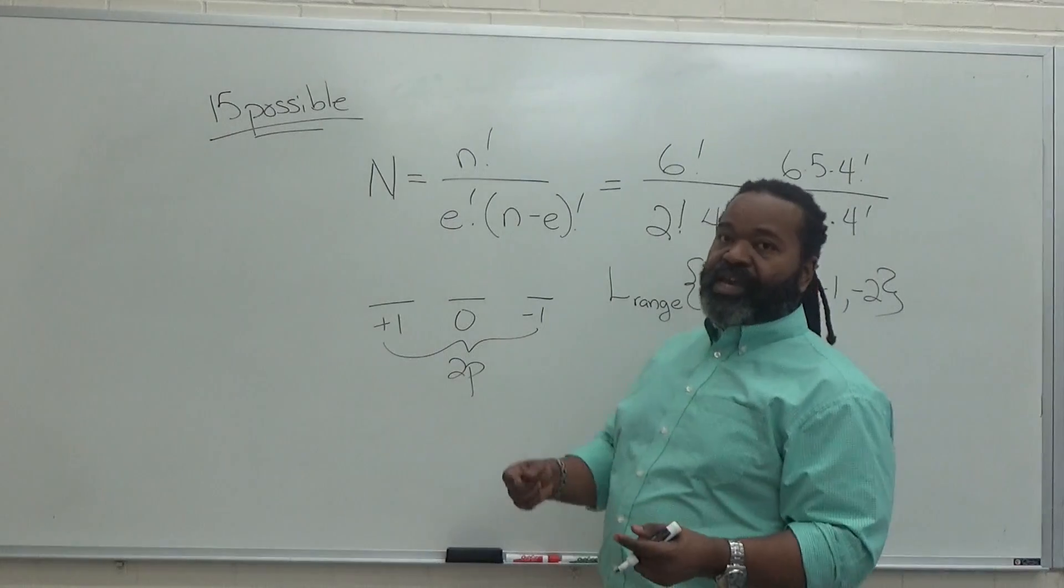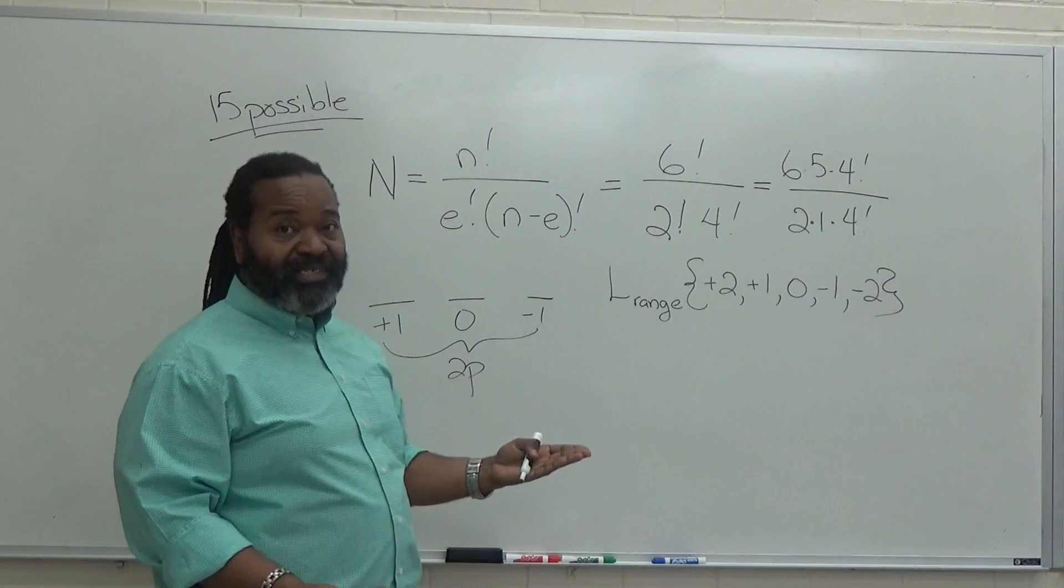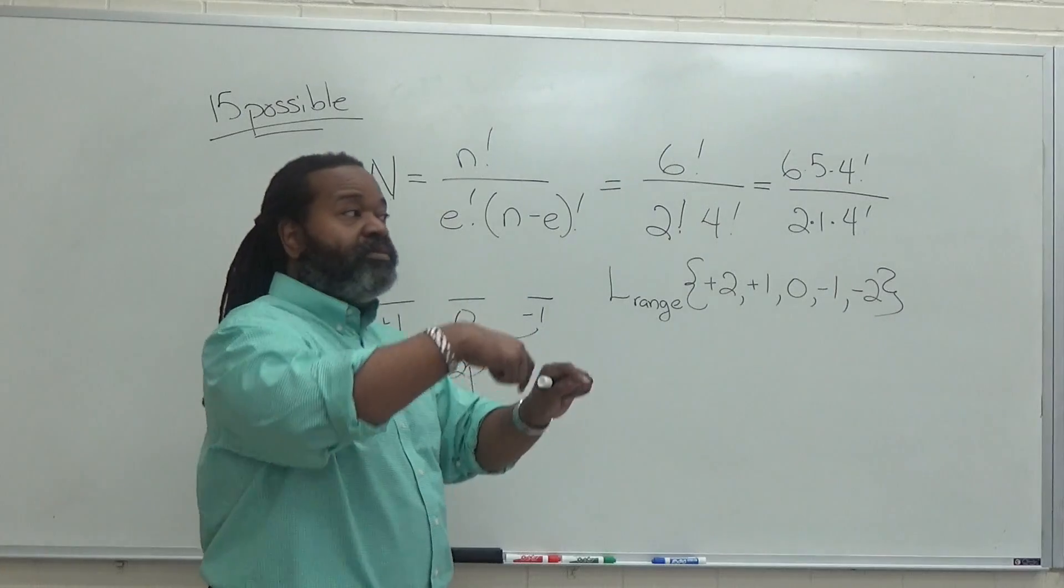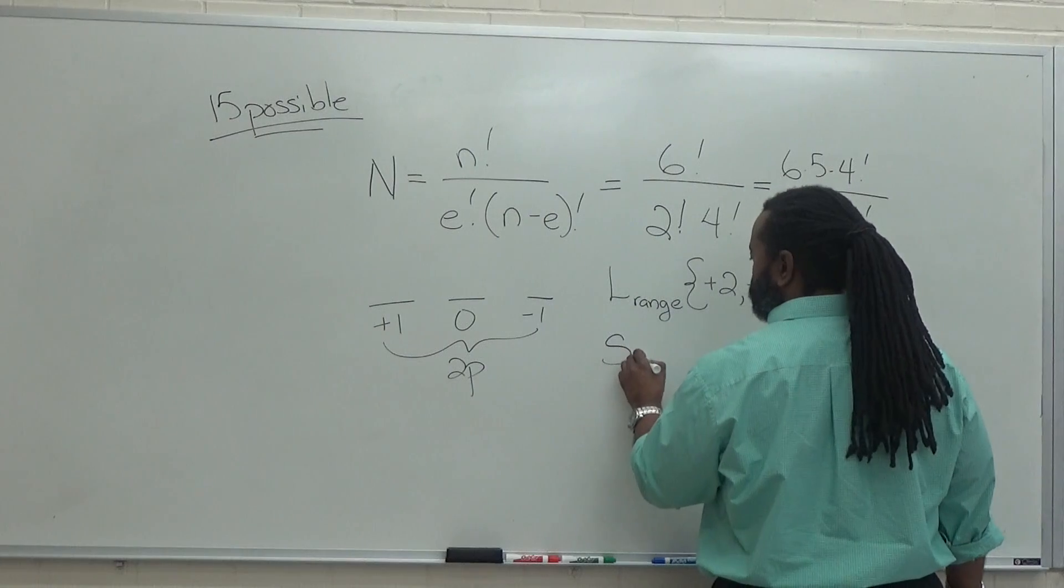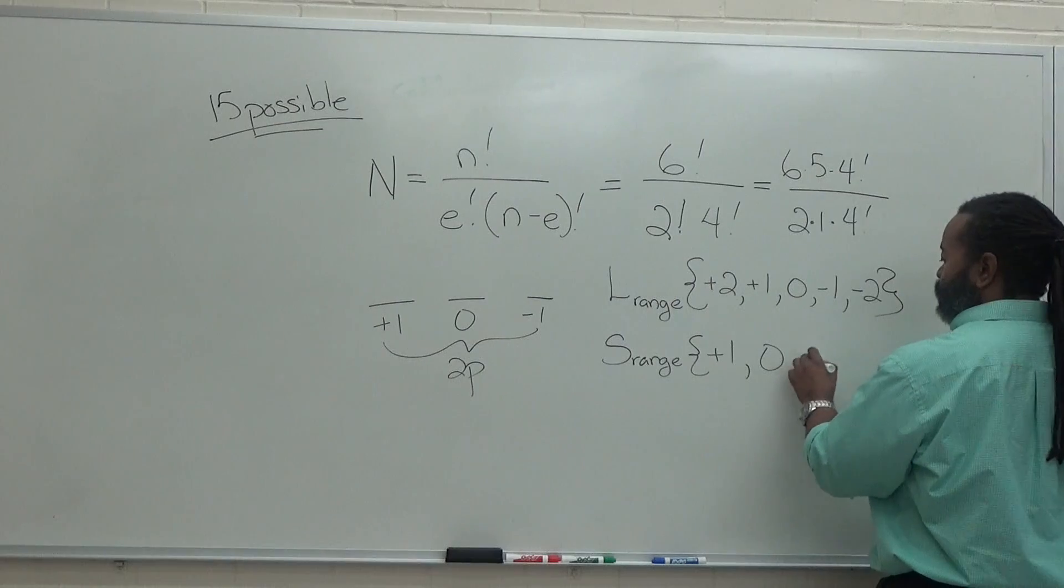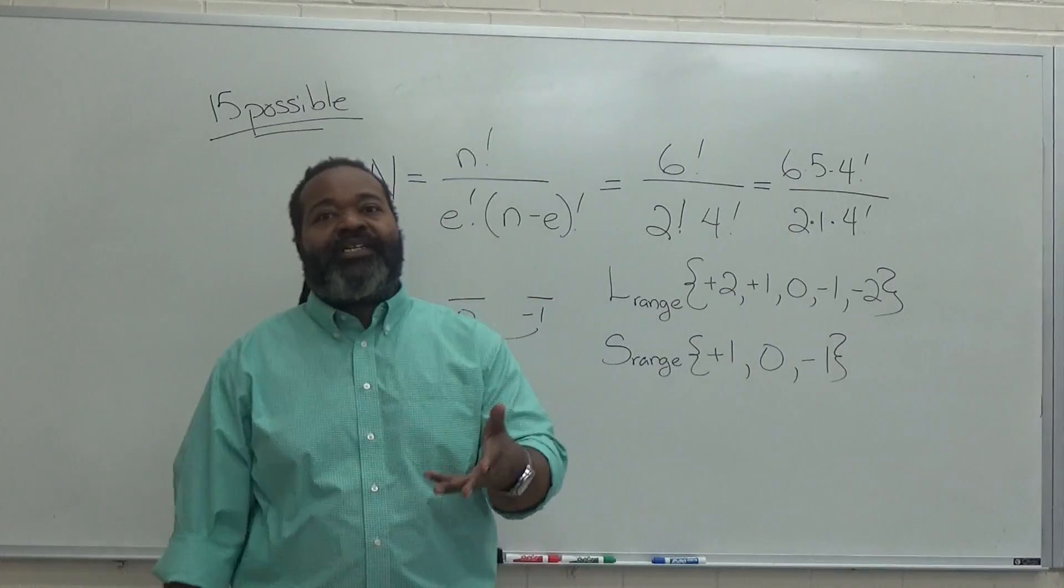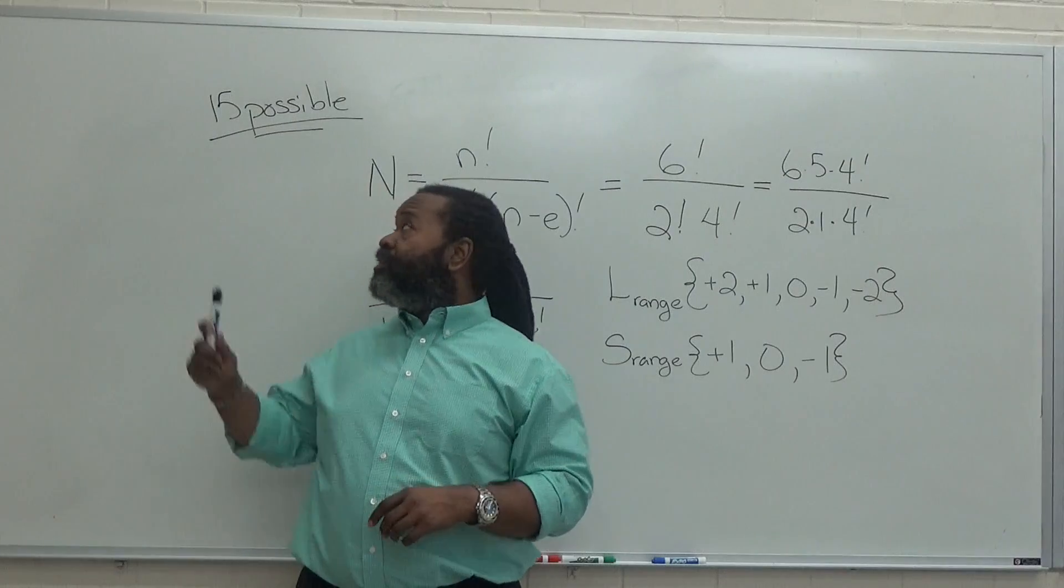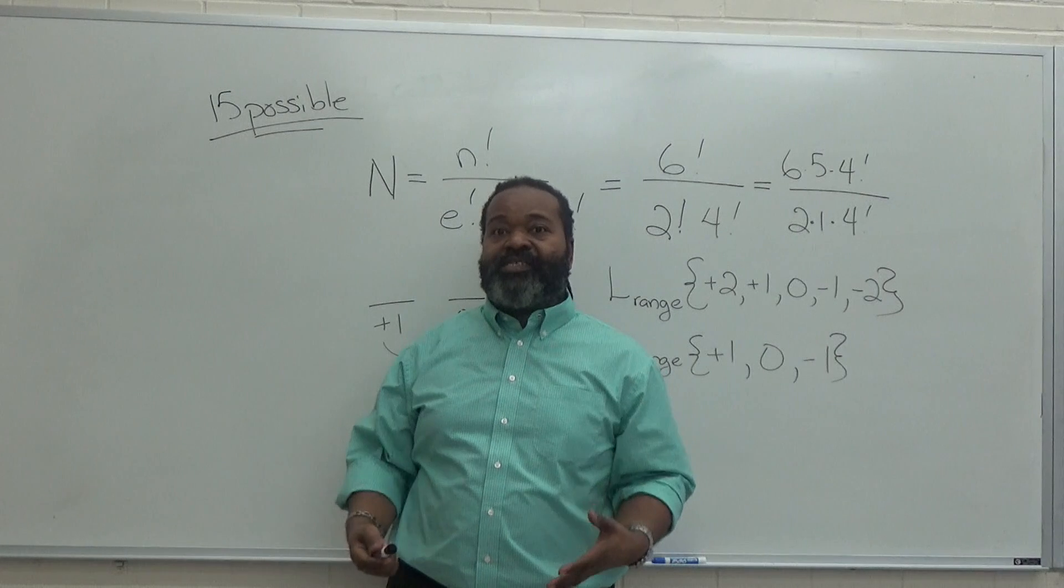For the spins, if we have one spin up, and then we unpair and we have a second spin up, our max spin could be plus one. If they're paired up, that's going to be a zero, and if they're both spin downs, that's minus one. So our S range goes from a plus one to zero to minus one. And if we notice, we have five possibilities for the L range and three possibilities for the S range. We multiply those two together, and we see that we, again, have 15, which matches the number of possible states.